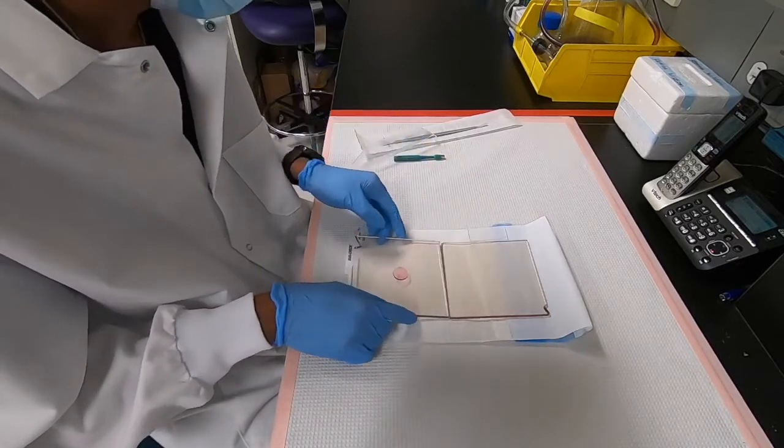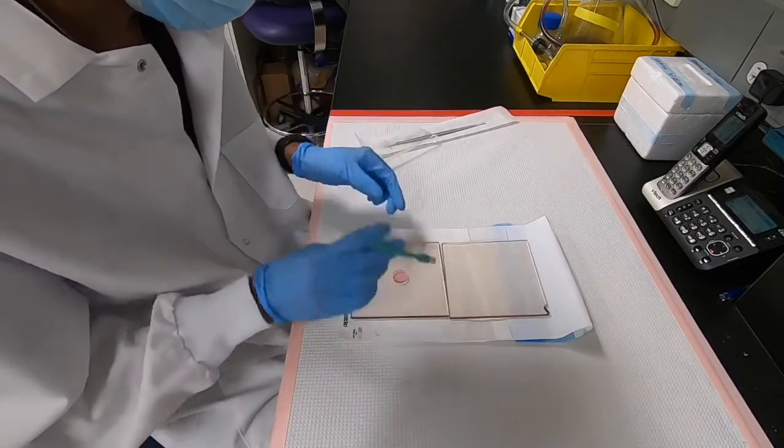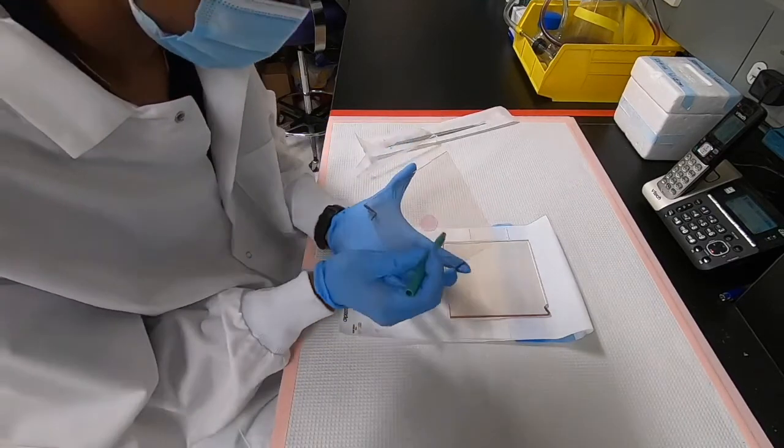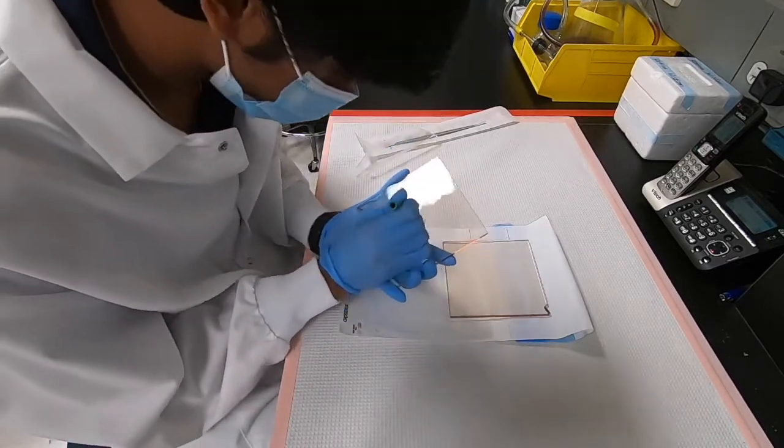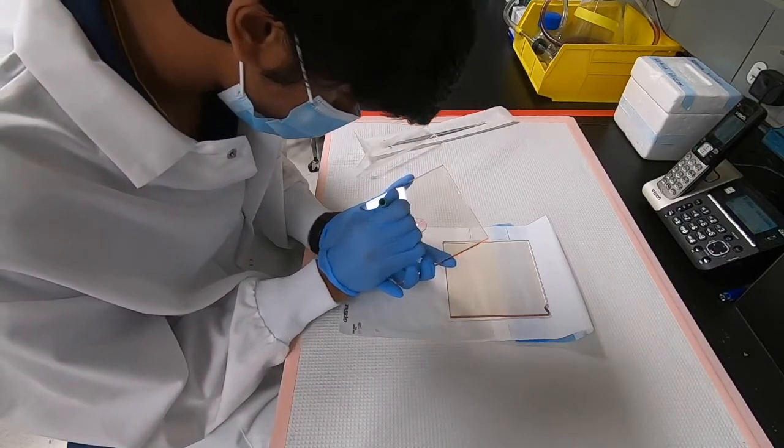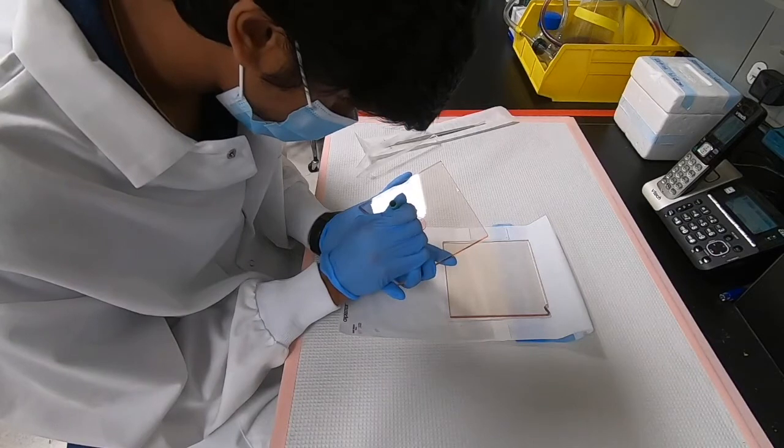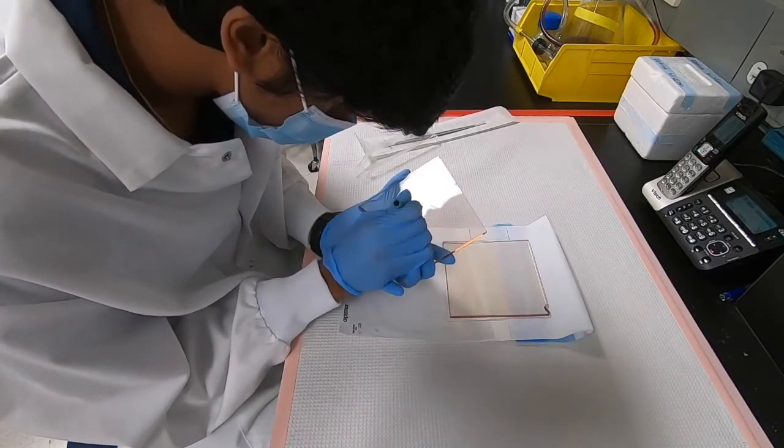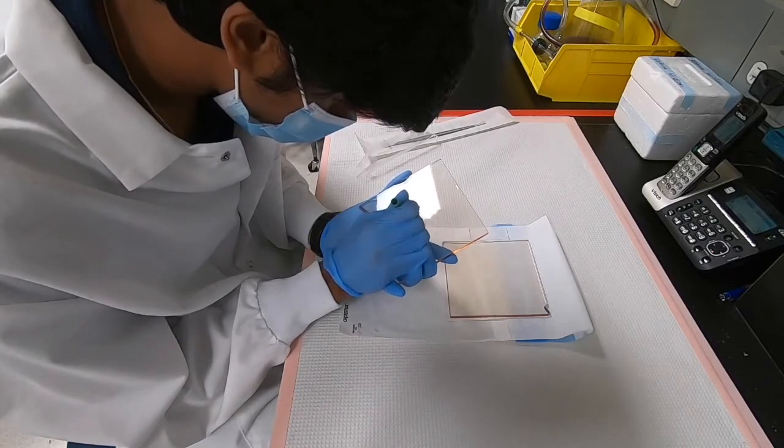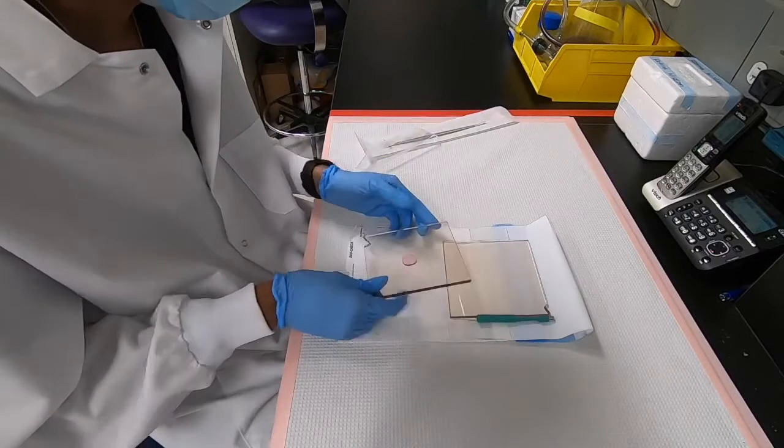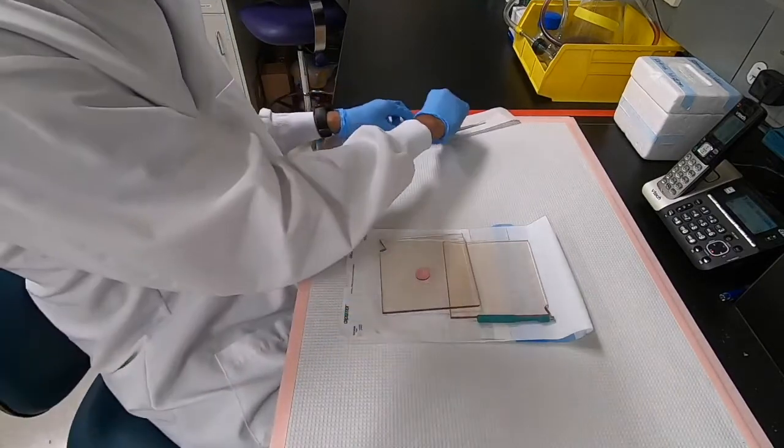We'll now cut the entire gel into smaller discs which we can use for various assays. Right now we're using a 6mm punch to cut out 6mm diameter discs. This can be a little hard at first, but with practice, you always get better.